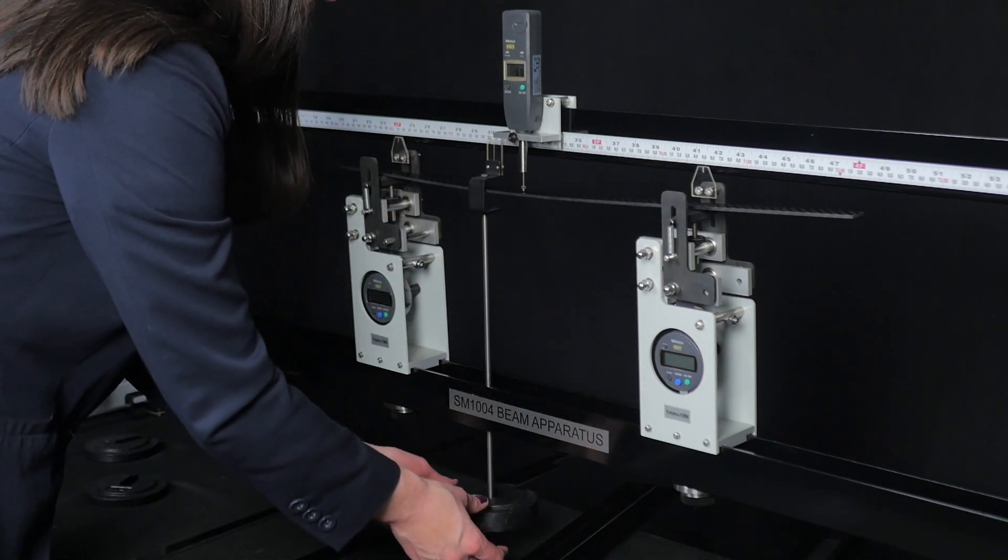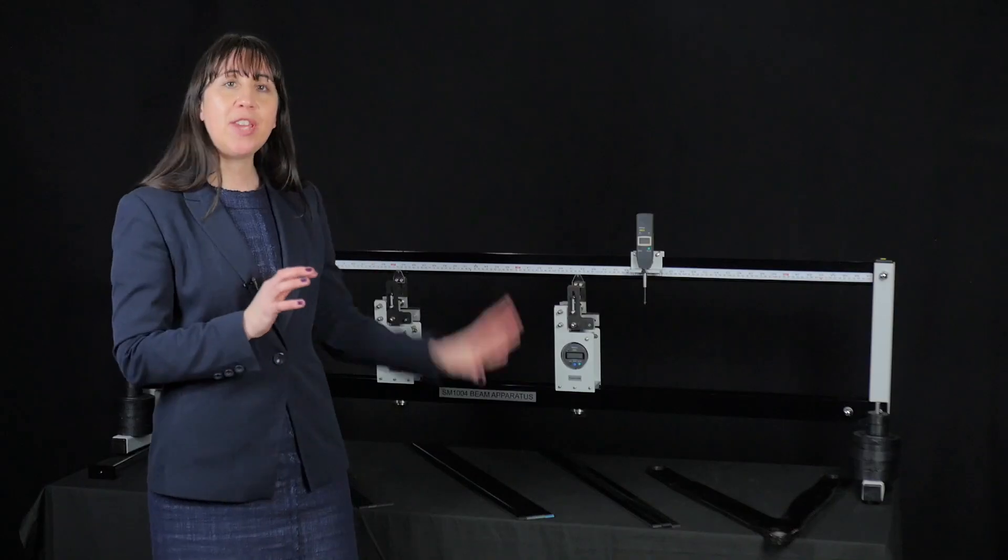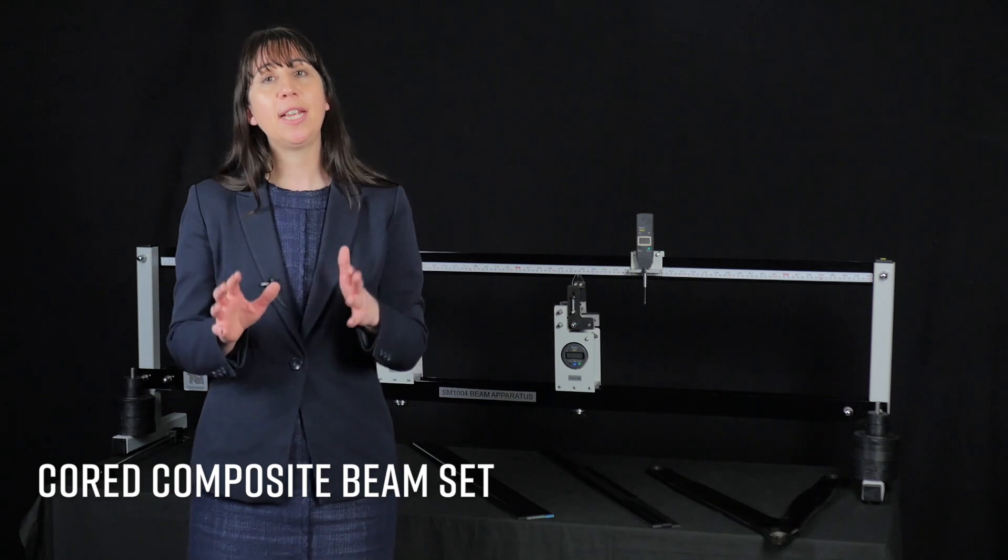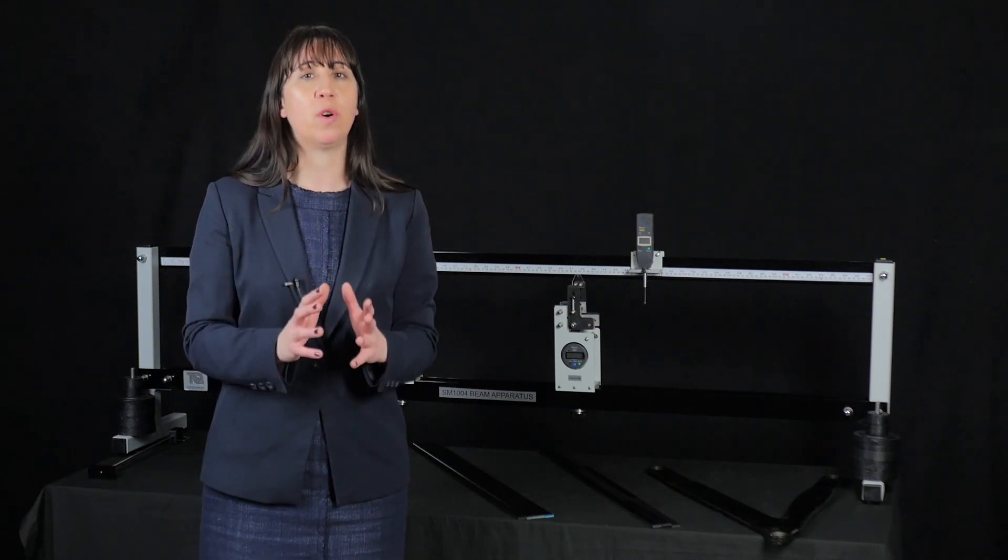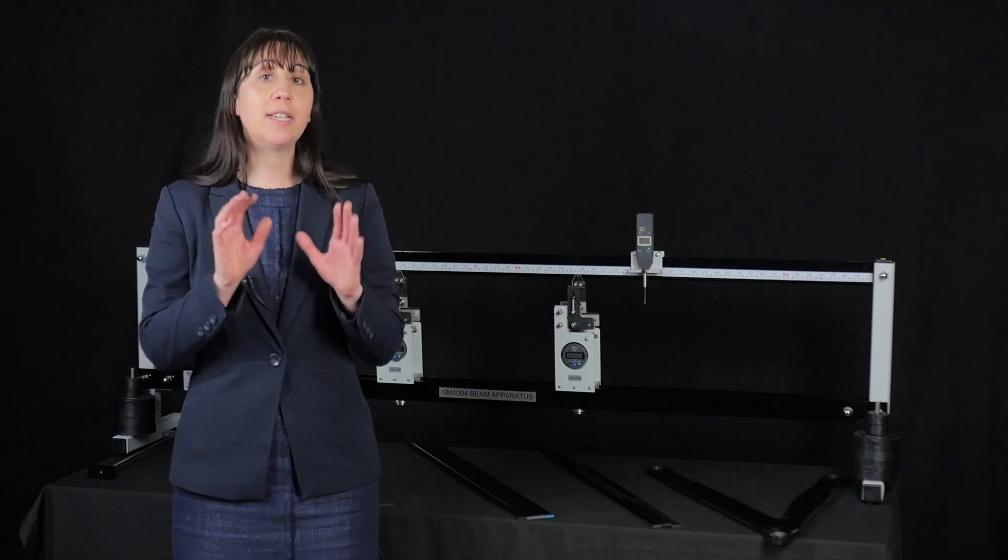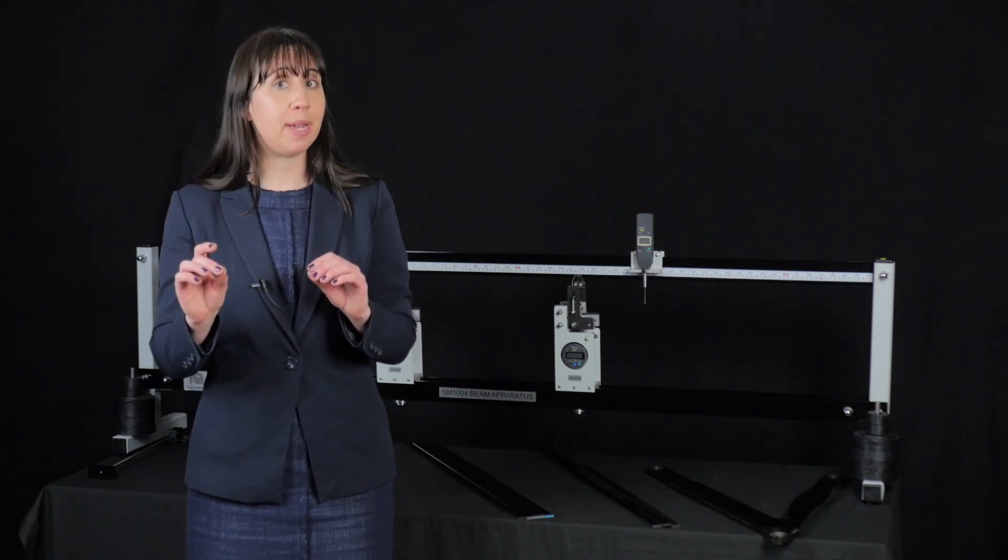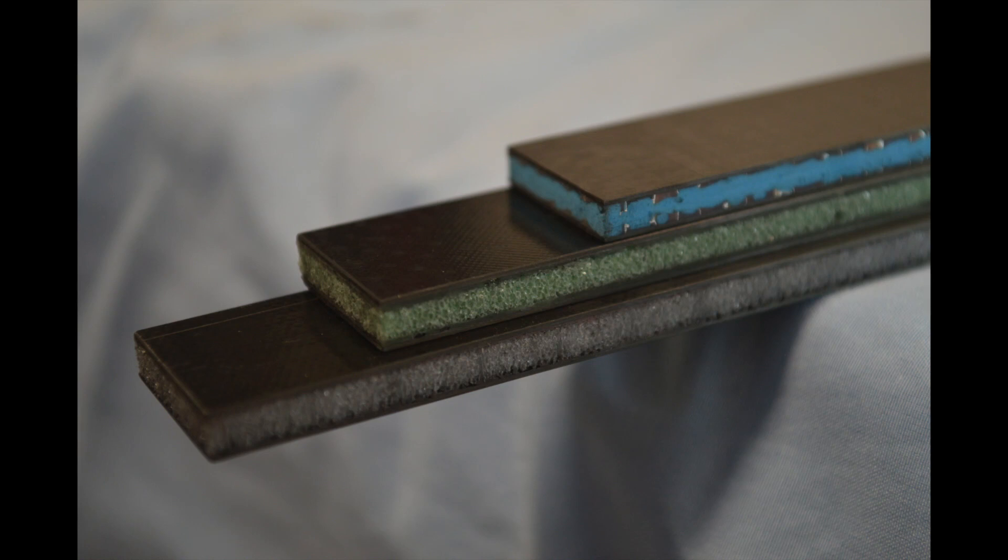Let's focus now on the core composite beam set. These four beams introduce students to core composites, each of which as a result of their different core have different bending characteristics. There's a couple of core beams with a different thickness of foam layer, a honeycomb beam and a solid carbon composite beam.